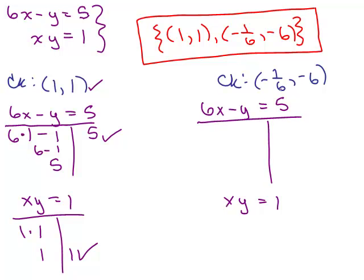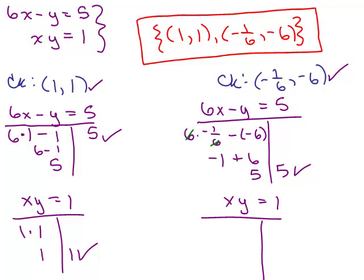Now let's check by putting negative 1/6 in for x and negative 6 in for y. So we've got 6 times negative 1/6 minus a negative 6 on the left-hand side. So my 6ths are canceled here and we've got negative 1 plus 6. Negative 1 plus 6 is 5 and on the other side we have 5, so that checks as well into this first equation. Next equation, putting in negative 1/6 for x, plugging in negative 6 for y. Negative 1/6 times negative 6, those are reciprocals. Negative times negative is positive, so that checks. So our solutions we obtained are correct.